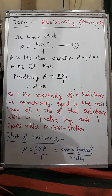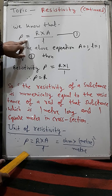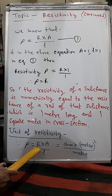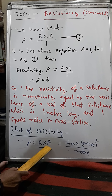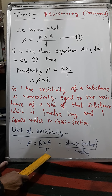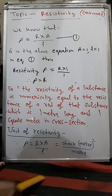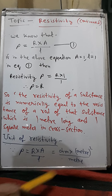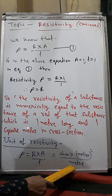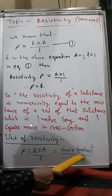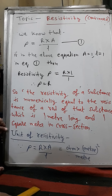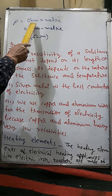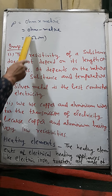In Class 12 also the formula was rho equals R into A upon L. To find the SI unit: the unit of resistance R is ohm, area is meter squared, and length is meter. So the unit becomes ohm into meter squared divided by meter, which gives us ohm-meter. Specific resistance is expressed in ohm-meter, symbolically written as Ω·m.